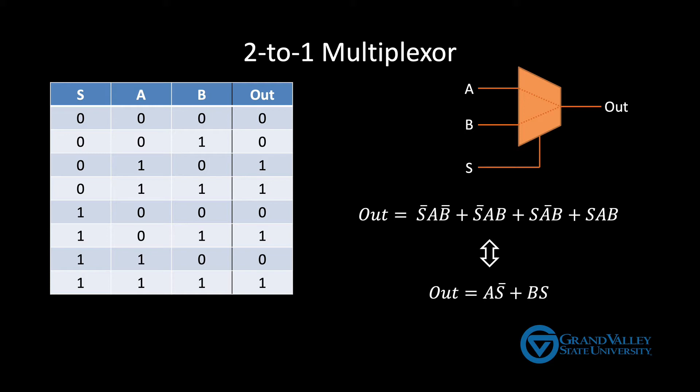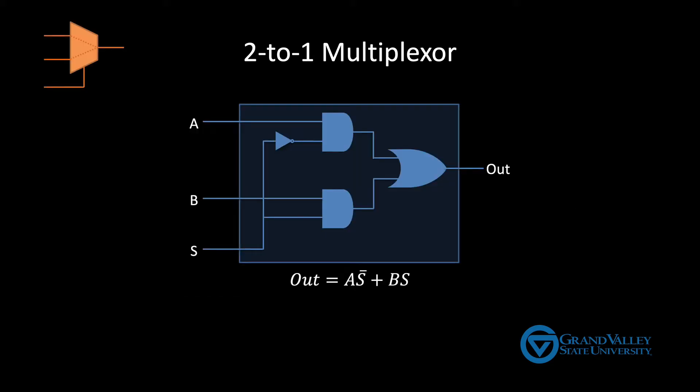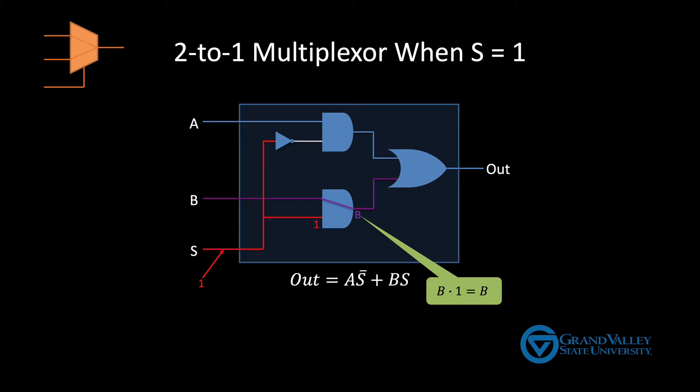Let's begin by looking carefully at why this reduced expression works. Consider what happens when S equals 1. In this case, the lower input to the lower AND gate is 1, which means the output of this AND gate equals its other input B, because B and true is always B. Also when S is 1, the second input to the upper AND gate is 0, which means that this AND gate's output is always 0, because A and false is always false. At this point, we can see the output of the circuit will be B, because 0 or B is always B.